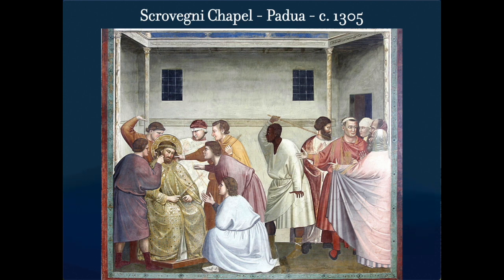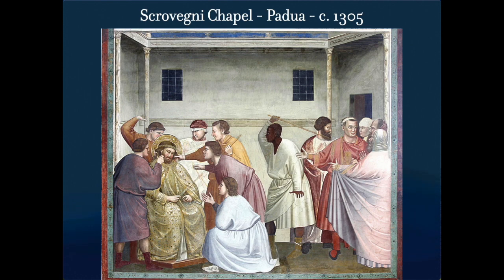In theater they call it breaking the fourth wall — when an actor turns to the audience. Giotto is starting to do that. None of the figures are really looking directly at us — we'll see that a little later in other artists — but Giotto is starting to break down that fourth wall. Another panel is more damaged and less restored, but there's a lot more action, emotion, and drama. You can see highlights hitting figures, making them look three-dimensional.